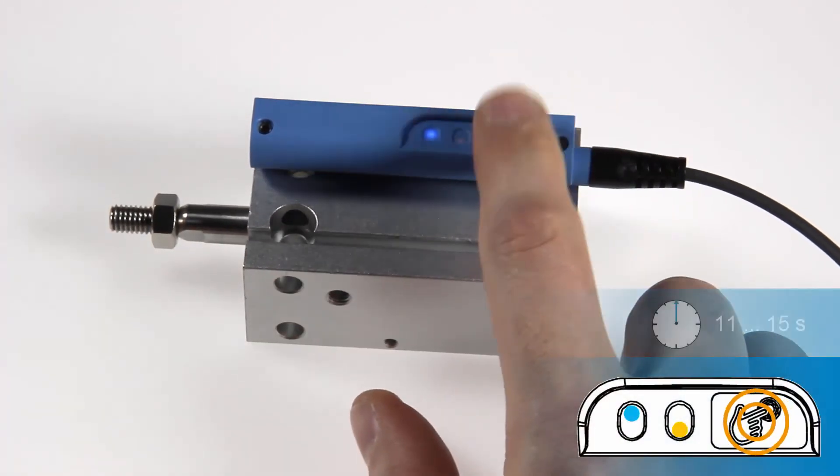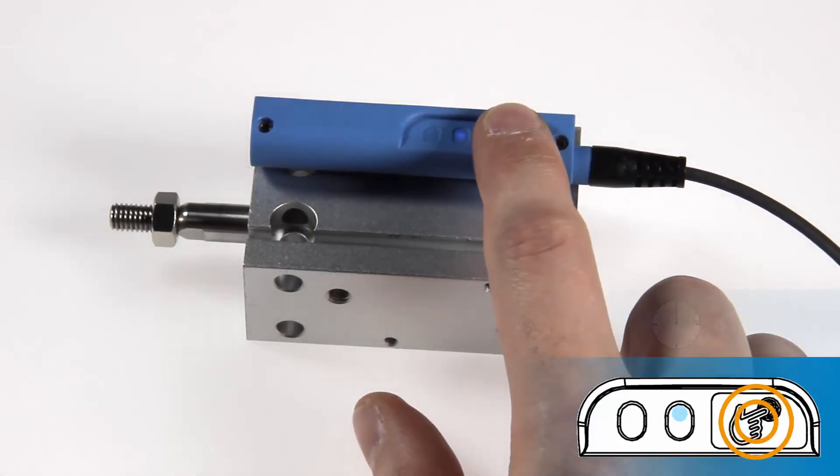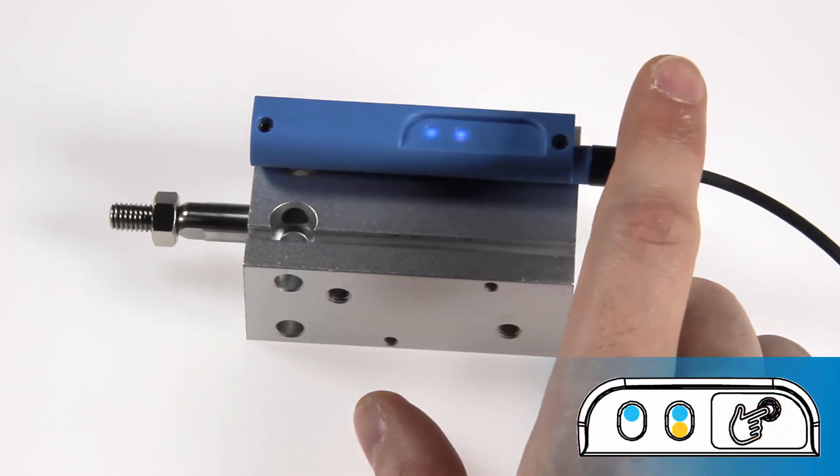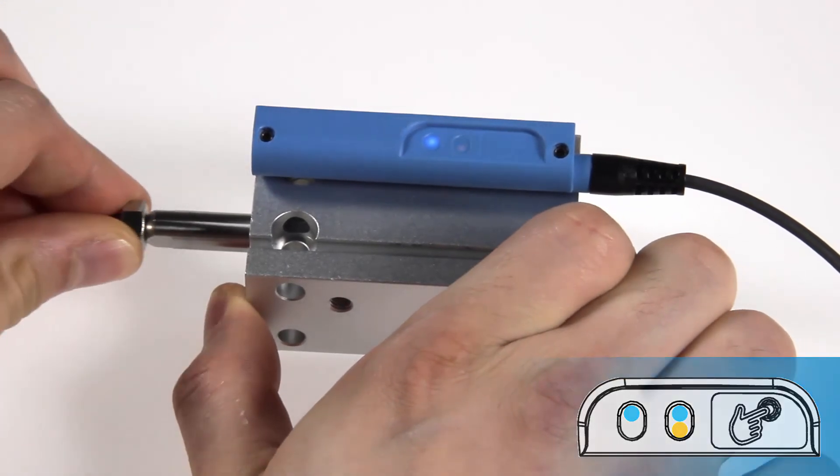Press the keypad and then hold the keypad between 11 and 15 seconds. The blue status LED flashes slowly. Lift your finger and then hold the keypad between 3 and 6 seconds. The green operating LED and the blue status LED flash slowly. The switching point is set as soon as you lift your finger.